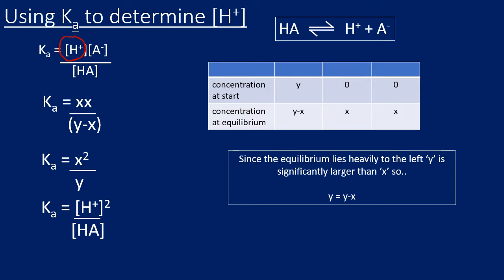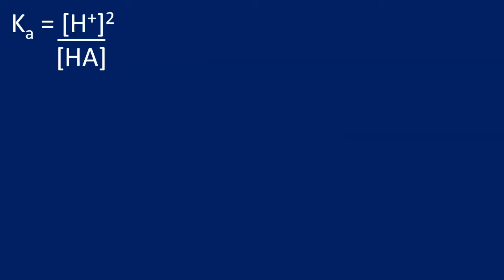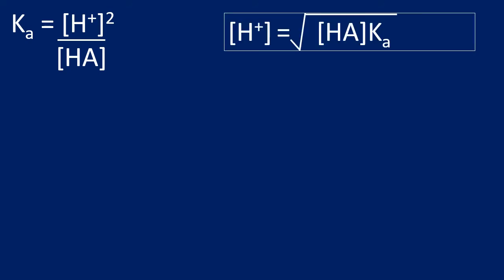Therefore the acid dissociation constant simplifies to x² / y, which is [H⁺]² / [HA], because the concentration of H⁺ equals the concentration of A⁻. We can rearrange this: [H⁺]² = Ka × [HA], and then take the square root. So [H⁺] = √(Ka × [HA]). In my experience, people tend to make calculator errors here, so it's worth practising as much as we can.